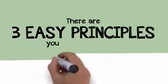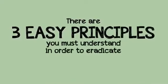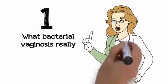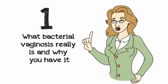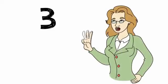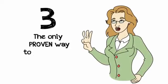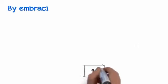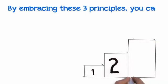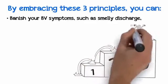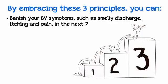There are three easy principles you must understand in order to eradicate BV for good: one, what bacterial vaginosis really is and why you have it; two, what doesn't work and what makes it worse; three, the only proven way to get rid of BV and all related symptoms forever. By embracing these three principles, you can banish your BV symptoms such as smelly discharge, itching, and pain in the next 72 hours.